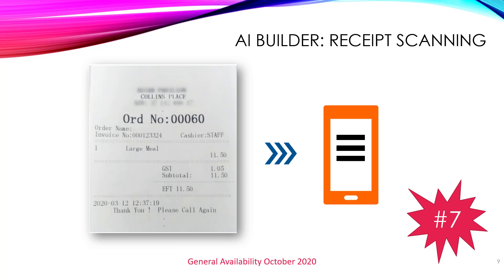Also on the AI Builder side, we are getting receipt scanning. This is a new model that will allow you to basically create your own expense app — scan a receipt, grab the total and details, and push that through. I think we're going to see a lot of DIY expense apps coming through once this feature is out and about.